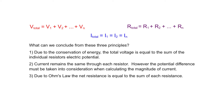Now let's review one more time before we start the lab. In series circuits: one, due to the conservation of energy, the total voltage is equal to the sum of the individual resistor's electric potential. Two, current remains the same through each resistor; however, the potential difference must be taken into consideration when calculating the magnitude of current.